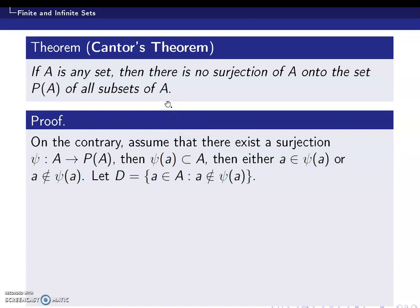We assume the contrary by assuming that there exists a surjection from A to P(A), which is denoted as ψ. Take an element small a in capital A. Since ψ is a surjection, ψ(a) belongs to P(A). Since P(A) contains the subsets of A, this implies ψ(a) should be a subset of capital A.